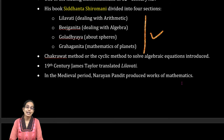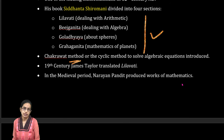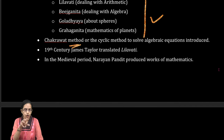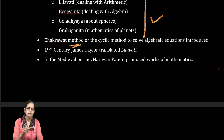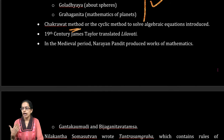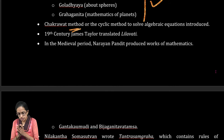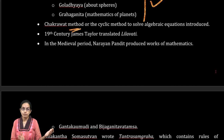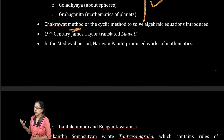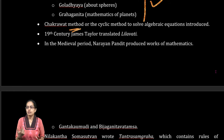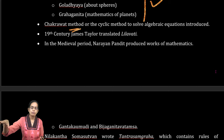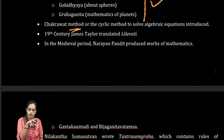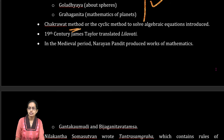Bhaskaracharya also talked about cyclic methods of solving an algebraic equation, known as the Chakravath method, which was very important. His work Leelavati, focusing on arithmetic, has been translated by James Taylor and also into Persian by Fezi. In the field of astronomy, two important observatories were developed — Feroz Shah Tughlaq's observatory in Delhi, and another at Daulatabad by Feroz Shah Bahamani.